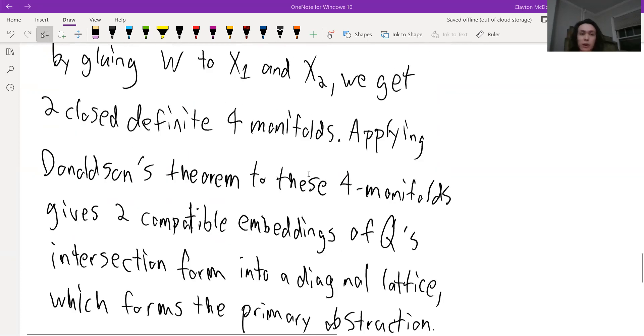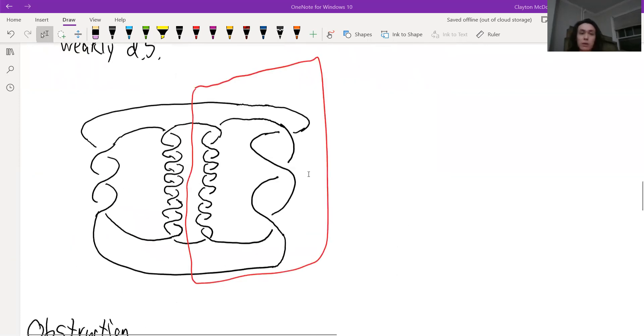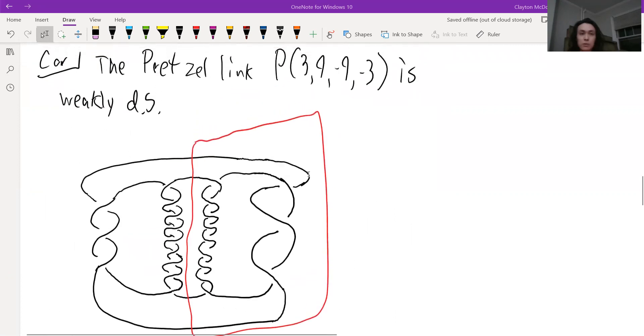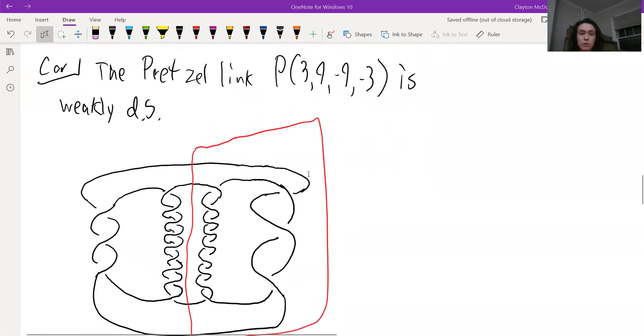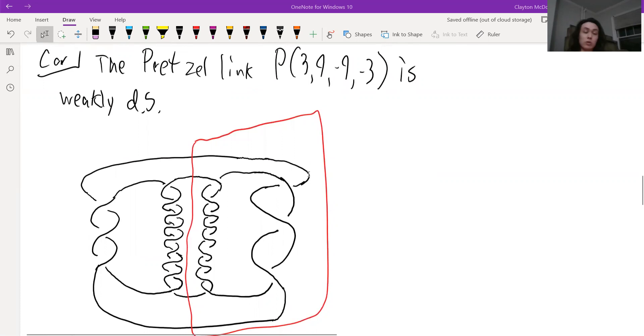So in particular, we have this guy right here, which is not strongly doubly slice, but in particular, we also know that the components are unknotted. So this kind of answers the original question we were trying to ask. Thank you.